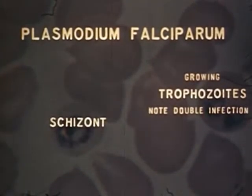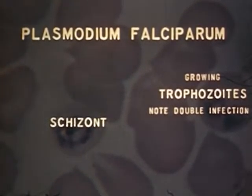The segmenters in falciparum are small, although not always this small, and produce from eight to twenty-four merozoites.